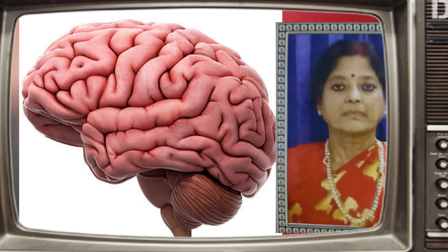Now let us learn memory techniques. The first is the visual image technique. Associate a visual image with a word or name to help you remember it better. Colorful and three-dimensional images will be easier to remember. For example, to remember the name Rose and what she is known for, picture a woman sitting on a park bench surrounded by roses, waiting as her bus pulls up.